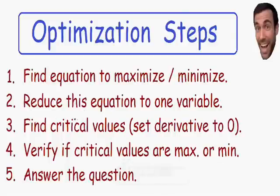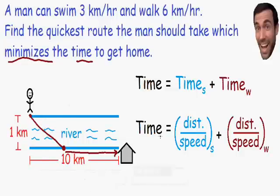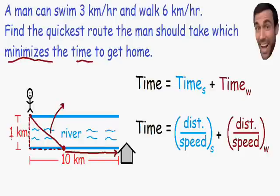Step number two says to reduce this equation to one variable. Right now our time equation is written in terms of distance and speed, and we need to reduce it to one variable. The distance the man swims is a diagonal line going across the river. An easy way to look at it is to make a right triangle, with the left side going across the river and the bottom side going to the point where he lands. The left side equals one kilometer because the river is one kilometer wide, and the bottom side we label as distance x.